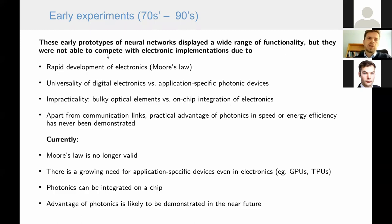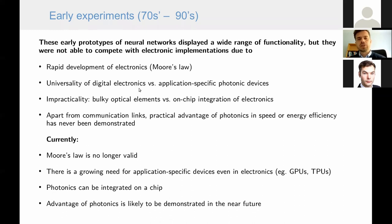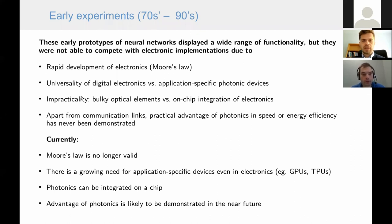Despite wide-ranging functionality, these early optical neural network prototypes never found practical applications. This was due to several factors: the rapid development of electronics via Moore's Law, the universality of electronics versus application-specific photonic devices, the impracticality of bulky optical elements compared to easily integrated electronics, and the fact that apart from communication, a practical advantage of photonics in speed or energy efficiency was never demonstrated.